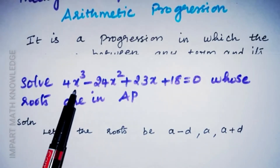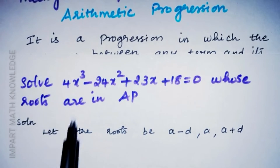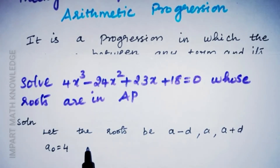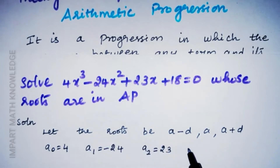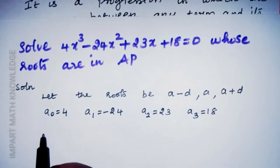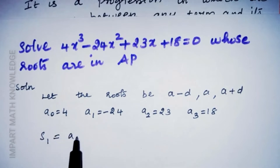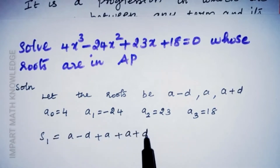From the given equation, the coefficient of x³ is 4, so a₀ = 4. The coefficient of x² is -24, so a₁ = -24. The coefficient of x is 23, so a₂ = 23, and the constant term a₃ = 18.